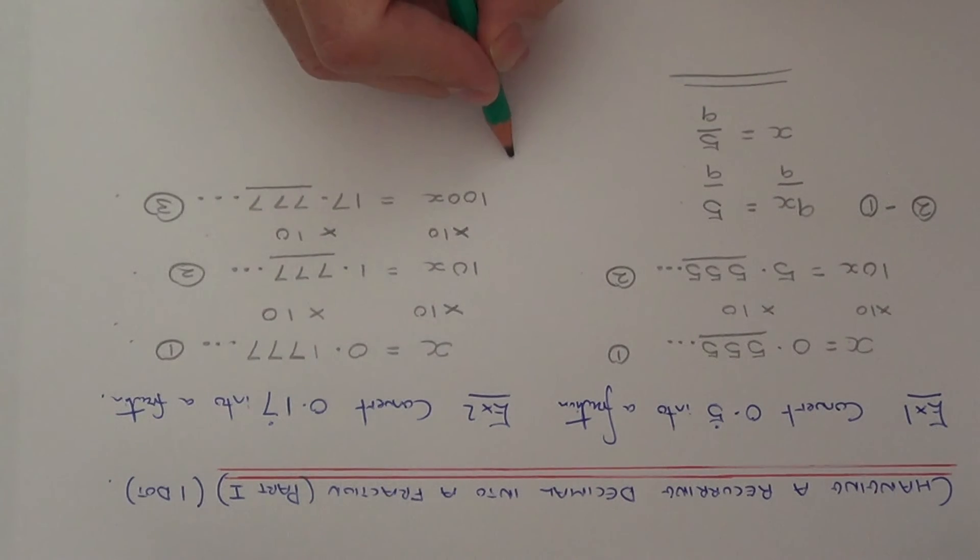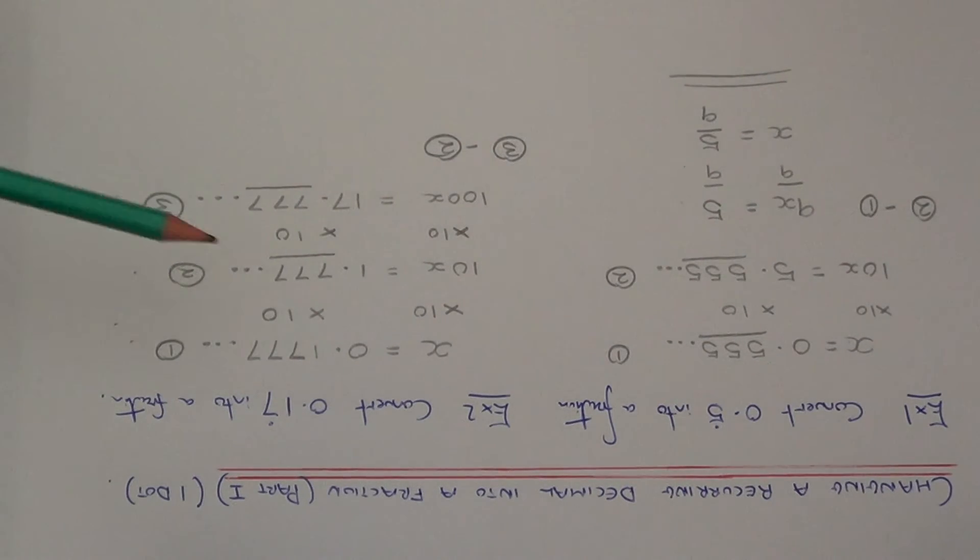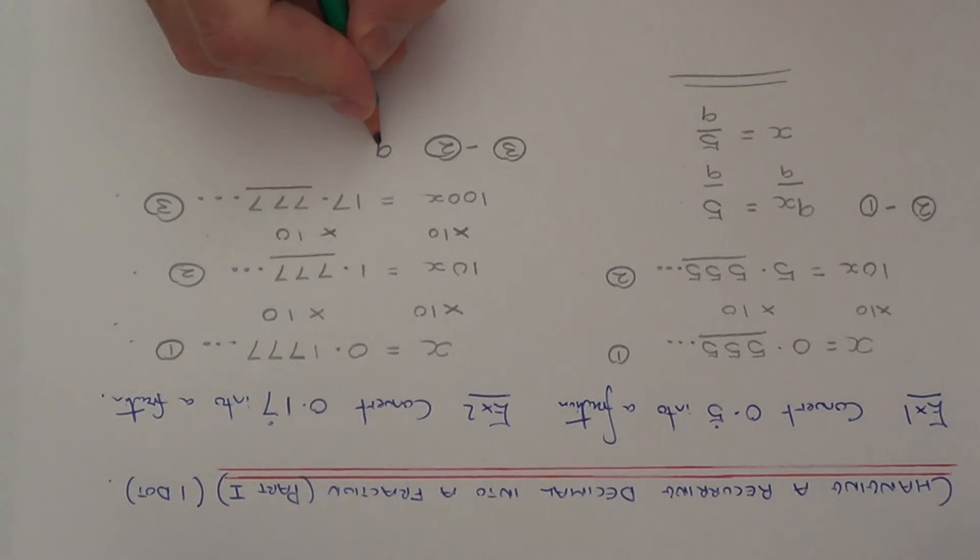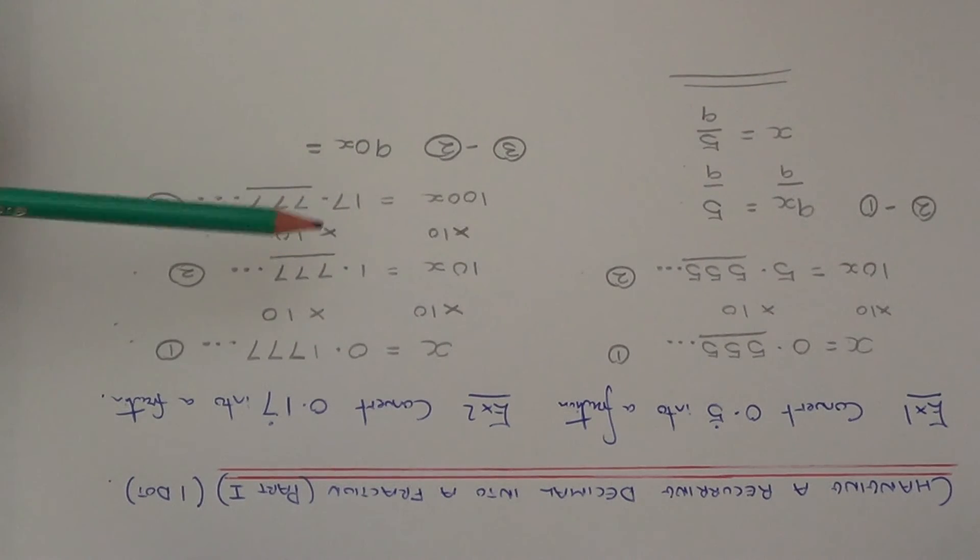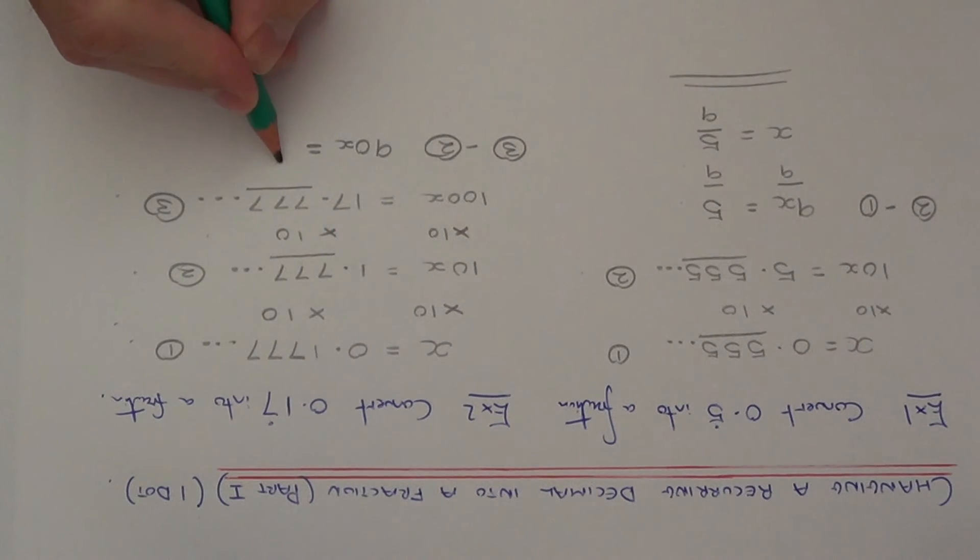This means I want to subtract these two equations away. So I'm going to do number 3 take away number 2. On the left hand side I'll have 100x take away 10x, which is 90x. And on the right hand side I just need to take away the whole numbers, because I know the decimal bits cancel out. 17 take away 1 is 16.